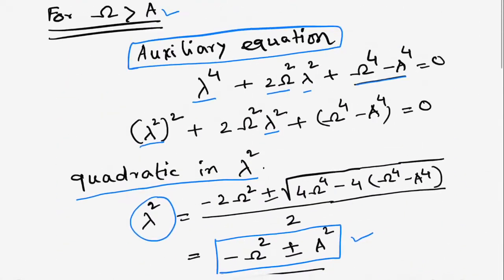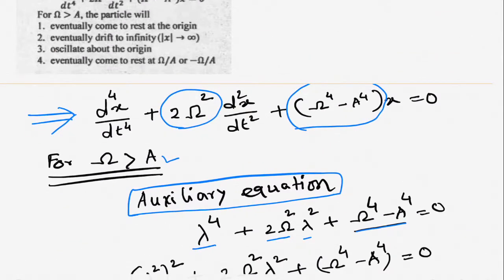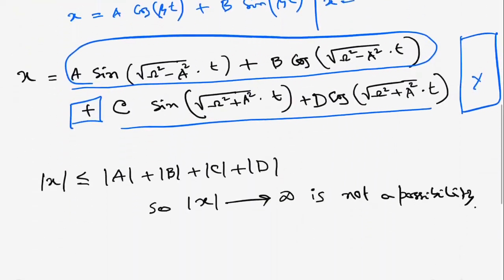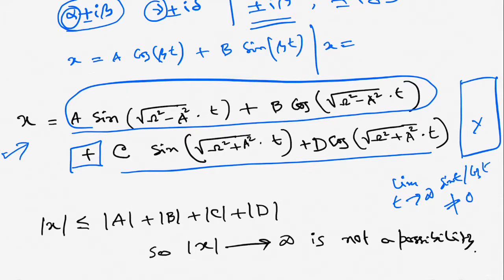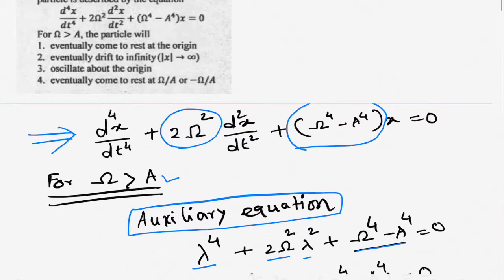The first option is 'eventually come to rest at the origin.' If we take the limit as t → ∞ in x = A cos(βt) + B sin(βt) + C cos(δt) + D sin(δt), then x is definitely not 0, because sin(constant · t) and cos(constant · t) never go to 0. For example, lim_{t→∞} sin(t) or cos(t) does not exist — they are never 0. Therefore, x → 0 as t → ∞ is never a possibility, so the first option is not correct.